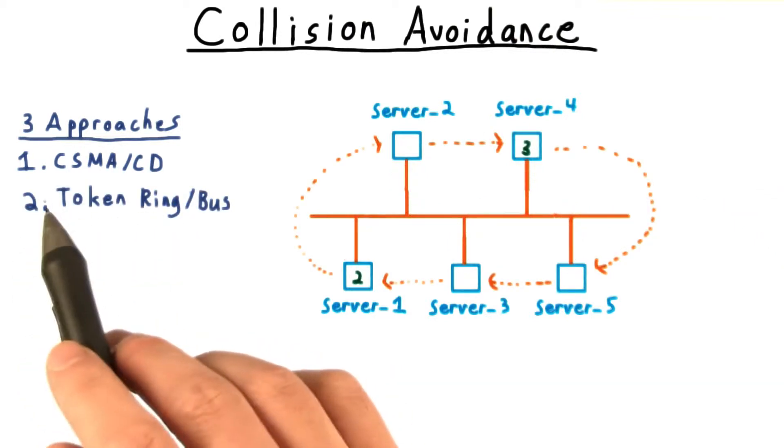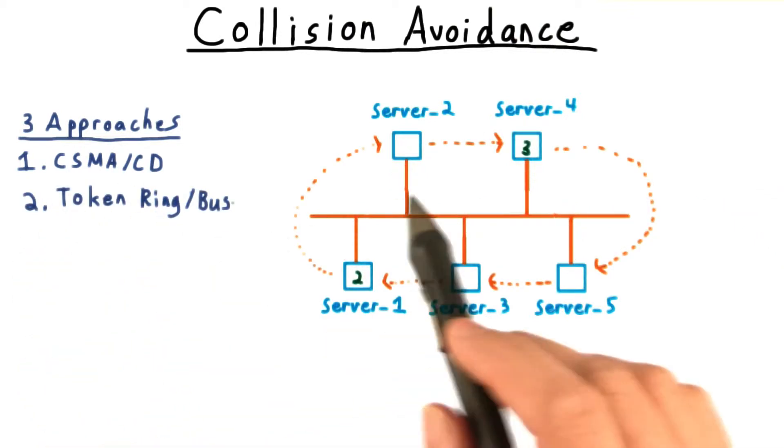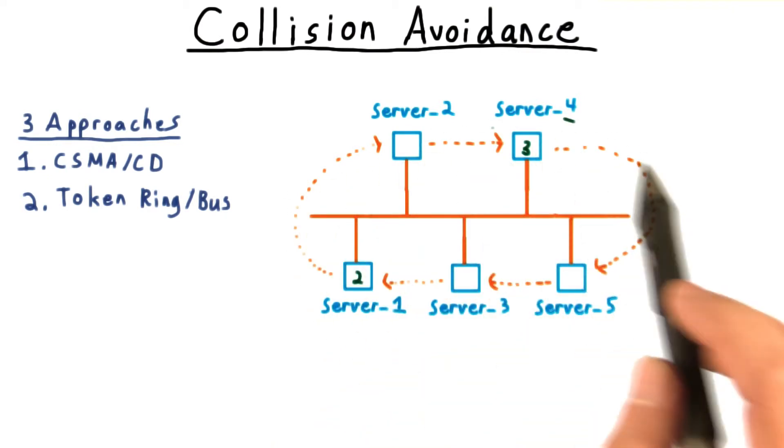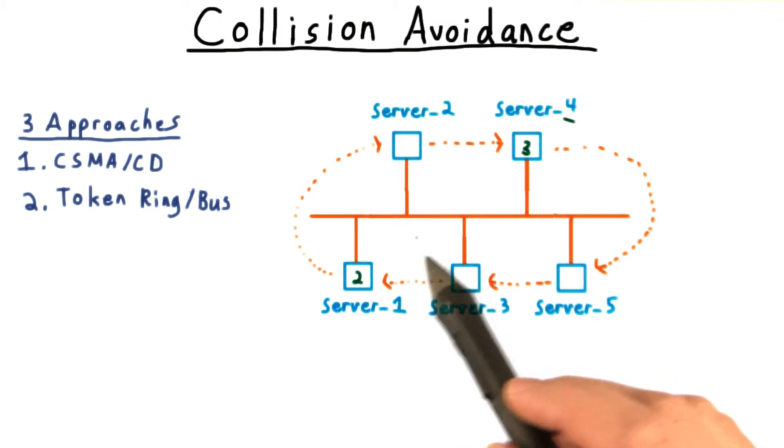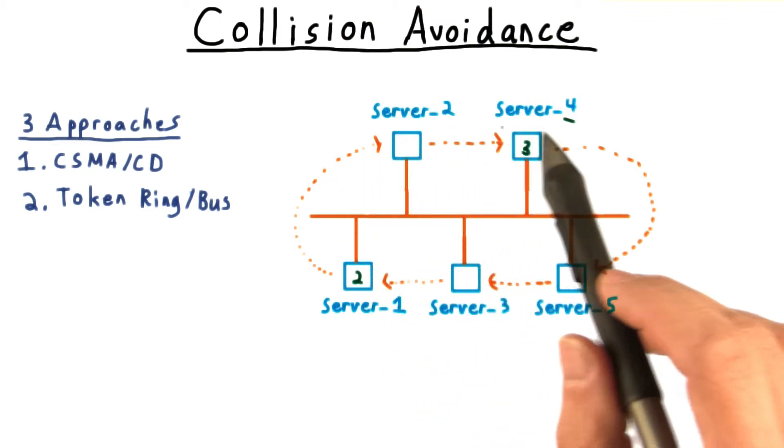Another solution to the collision problem is token ring or token bus. Here the nodes in the network are arranged in a ring, either through physical connections or logically. They then continually pass around a token that is empty by default. That determines whose turn it is.